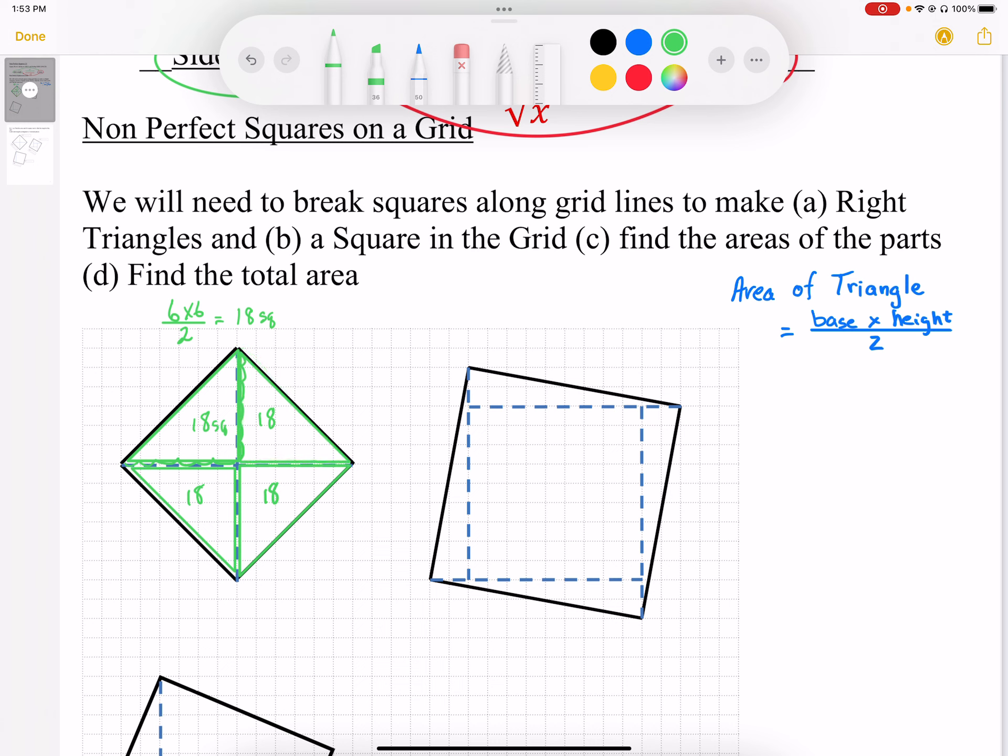So we can be fairly confident then that the total area of that non-perfect square is going to be 18 plus 18 plus 18 plus 18. If we add that up on our calculator, make sure you're practicing adding that up, that's going to be 72 squares in total.